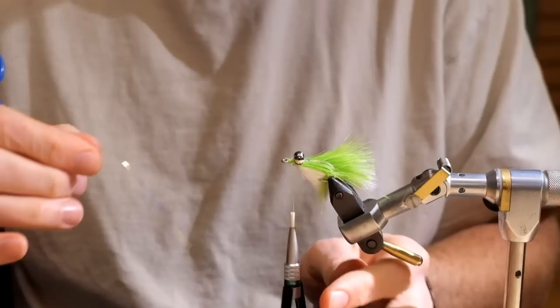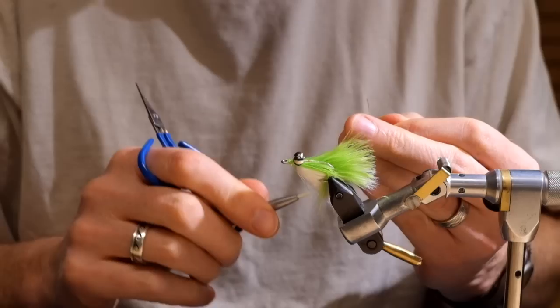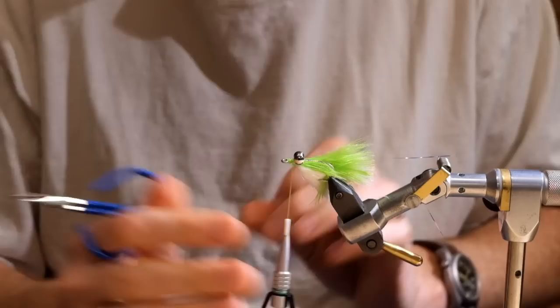We're gonna take a single strand of that same chartreuse Mirage Flashaboo and I'm gonna wrap it around the thread so it's divided evenly. And make a wrap so it's right on the side of the hook. In this case, it's right on the side of the hook closest to me.